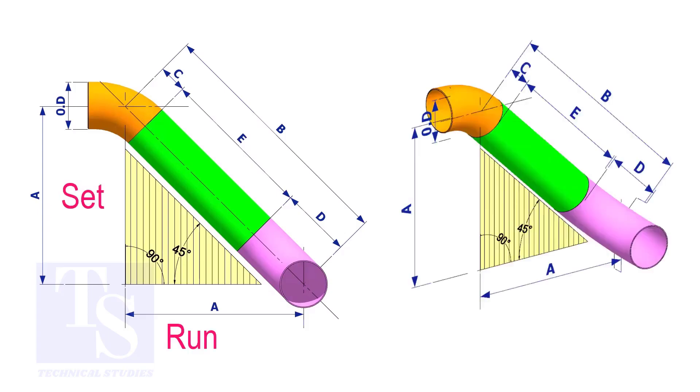In an offset, if the including angle is 45 degrees, the set and the run shall be the same. If the value of the set and the run are equal, the value of the travel is set or the run multiplied by 1.414.